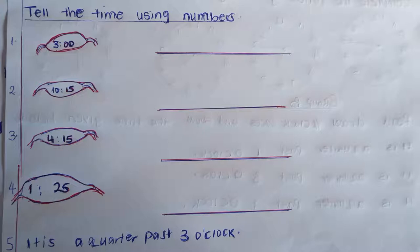Here we are — tell the following time. Three: we have two dots and two zeros, what time is that? This is three o'clock. Number two: it is ten and fifteen — a quarter past ten o'clock. Then four fifteen — a quarter past four o'clock. Then one twenty-five — you can say twenty-five minutes past one. Lastly, the long hand should be in three and the short one past three. Thank you very much.